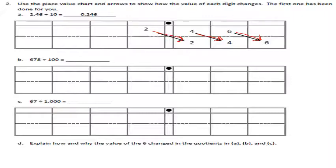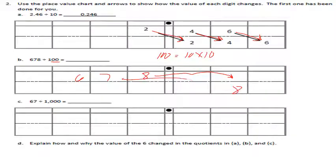The next one: 678 divided by 100. Since 100 equals ten times ten, there are two multiples of ten, so we move digits two place values to the right. The eight moves two places, the seven moves two places, and the six moves two places. We put in our decimal point.